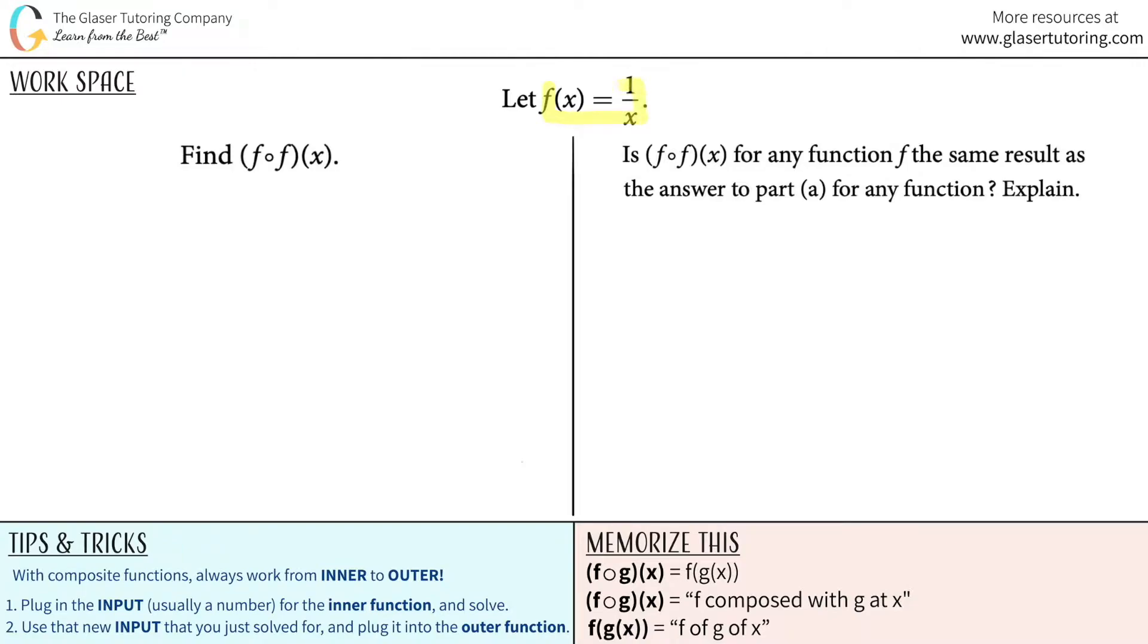Let f of x equals 1 over x. Now we have to find f composed with f at x. So first thing is, I don't really like this notation, so I'm going to take it out of this notation and use the other composite function notation. You should be familiar with interchanging both of them. Just know that this notation is the same as representing it as this. The first letter is always the outer function and the second letter is always the inner function.